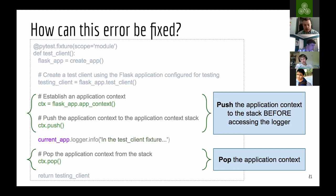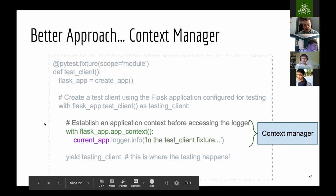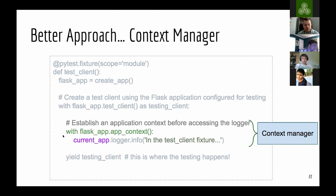A better approach would be to use a context manager. We can simplify the lines from the previous approach by using a with statement: `with app.app_context()`. This takes care of all the steps beforehand — pushing the application context onto the stack — and cleans up by popping from the stack automatically. Then you can go ahead and use your current_app proxy to access your logger. It's a really clean approach.